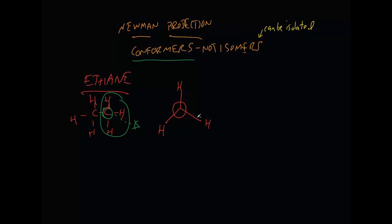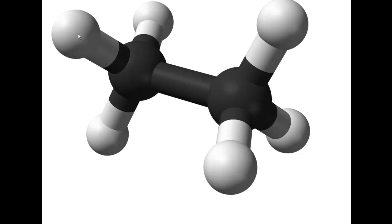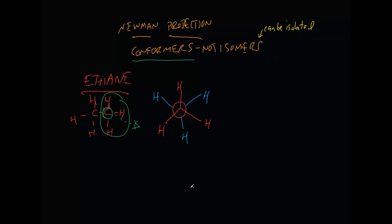Since the front carbon is blocking the back one, the only thing I can draw is the hydrogens sticking out from the back — kind of like a reverse peace symbol. I draw blue lines out to the sides of the circle, because the center area is reserved for the front carbon. These three blue hydrogens represent the back carbon's hydrogens, which are in the inverted peace-symbol position. This is the Newman projection for the staggered conformation of ethane.